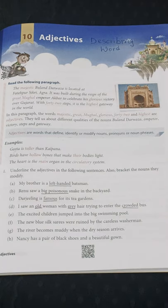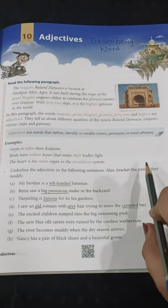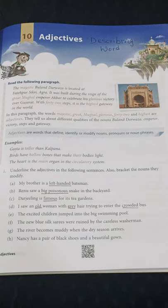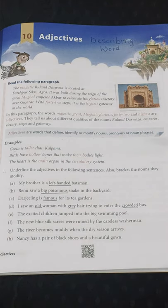Understood students? Now let us start question number one. Underline the adjectives in the following sentences. Also bracket the nouns they modify. Here you have to underline the adjectives, and after underlining them, you have to make a bracket on the noun that is being described by the given adjective.